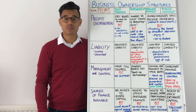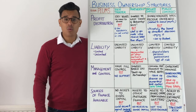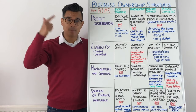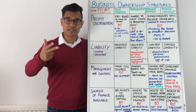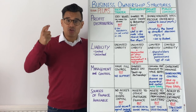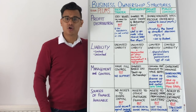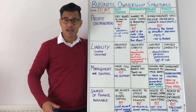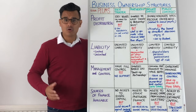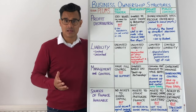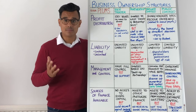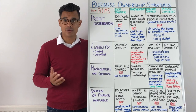Let's have a sesh on business ownership structures. When we're talking about business ownership structures, you're thinking about sole traders, partnerships, private limited companies and public limited companies. When you're having a longer question on business ownership structures and you might be asked to analyse the pros or cons of a particular business ownership structure, or you're trying to recommend a particular business ownership structure over another one,